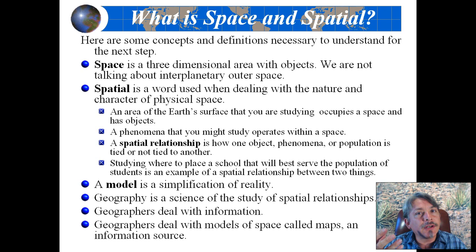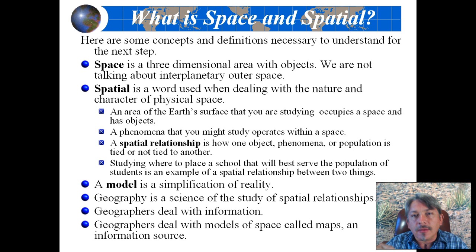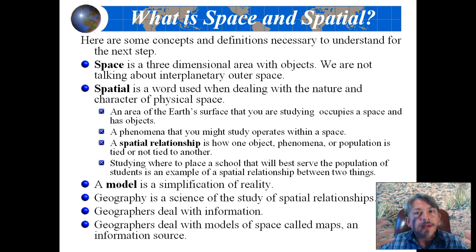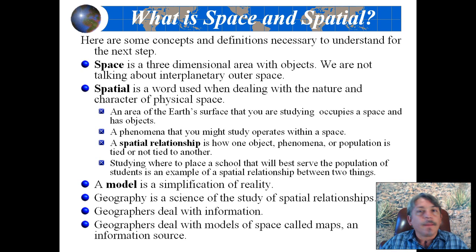Spatial relationships describe how one object, phenomena, or population is tied or not tied to another — for example, studying where to place a school in the center of a population that has enough children to justify building one. A model is basically a simplification of reality, like a model airplane representing a real aircraft reduced down in scale to fit on your desktop. Geography is a science that studies spatial relationships. We deal with information and with models of space called maps, which are an information source.